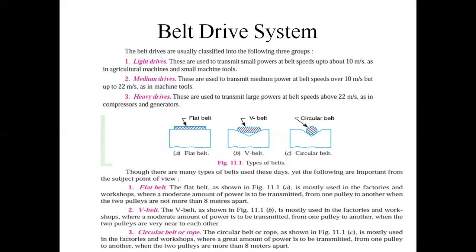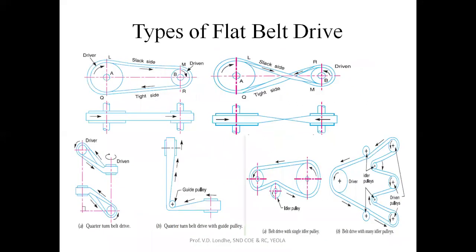Belt drives are also classified by position. Here you can see the driving pulley and the driven pulley, surrounded by a continuous belt system. When the driver moves in the clockwise direction, one side becomes the tight side and the other becomes the slack side. This type of drive system is called an open belt drive system, where the tight side and slack side are continuous.